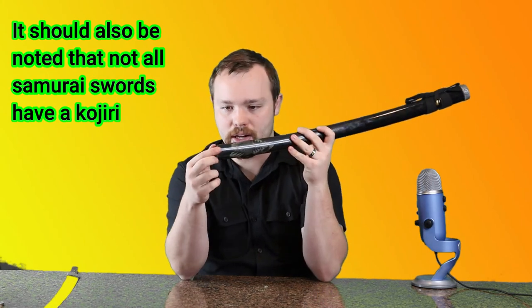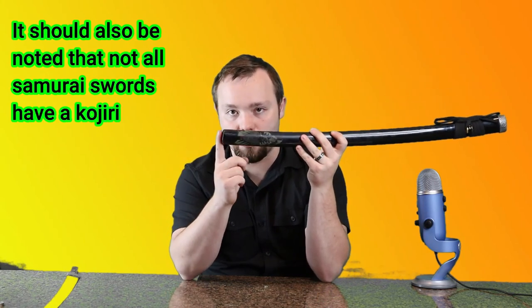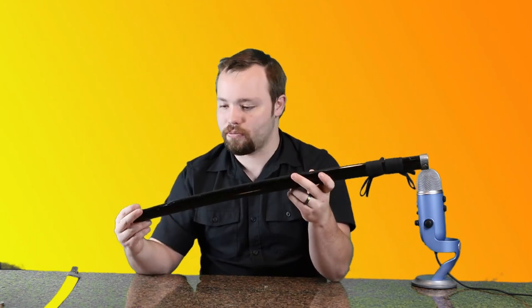The final piece that is on the scabbard or the Saya is the Kojiri. It doesn't have one on this particular blade because it's a cheap blade, but it is a metal end cap that would fit right here to protect your blade in case it was put up against the ground or on rocks or something else. So that is all of the pieces of the Saya.